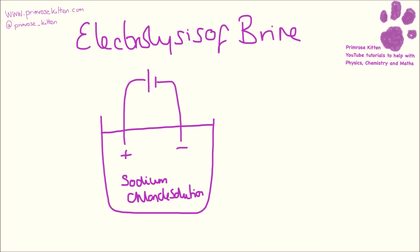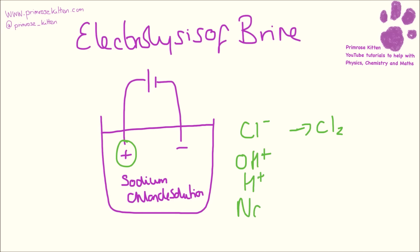In the electrolysis of sodium chloride solution, we are going to have chloride ions going towards the positive electrode and these are going to turn into chlorine gas. Now because this is a solution, we are going to have hydroxide ions, hydrogen ions, and sodium ions as well. The hydrogen ions are going to go towards the positive electrode and be turned into hydrogen gas. And then we have the sodium and the hydroxide left over — these are going to turn into sodium hydroxide, which is bleach.